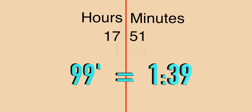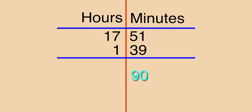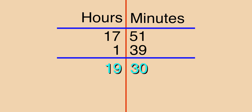First, separate the 17 hours from the 51 minutes as shown. Understanding that 99 minutes is 1 hour and 39 minutes, add the minutes together and then the hours. Your answer so far is 18 hours and 90 minutes. Since the minutes exceeded an hour's time, reduce the minutes by 60 and add that hour back to your 18. Your ETA is 19:30 hours.